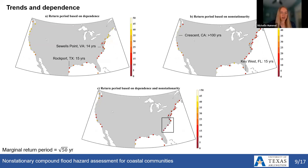Finally, we consider dependence and non-stationarity together to look at their compound effects. We see that this increases the risk of compound flooding across most of our coastal areas, except for some locations in the Pacific Northwest. Stations along the Southeast Atlantic coast experience the highest risk of compound flooding, with return periods generally reduced to less than 10 years as a result of considering both dependence and non-stationarity.